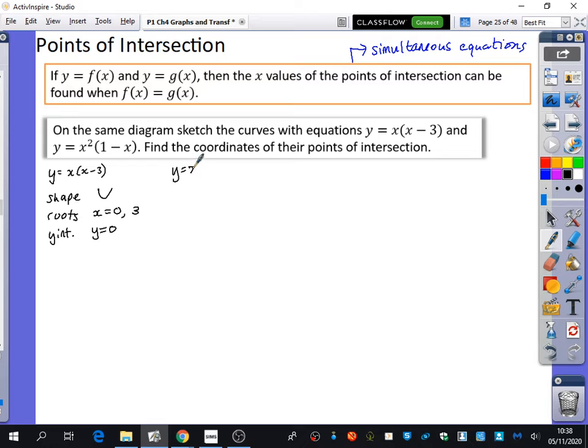Now, my next one is x²(1 - x). What's the shape? Negative cubic. Good. It's a negative cubic, so it's going to be that kind of shape. And what are the roots as well? 0. It touches the thing. Do you remember what we call that one? The repeated root. OK. The repeated root. 2 there to show it's twice and 1.